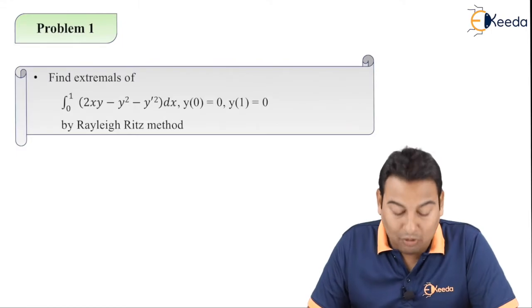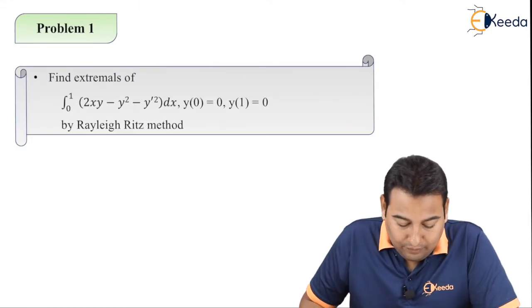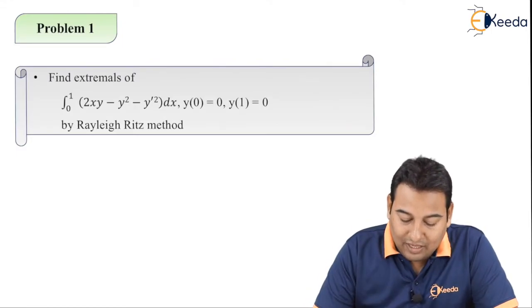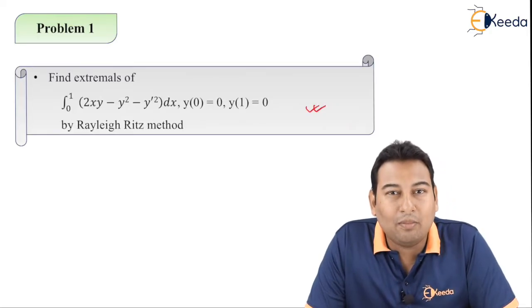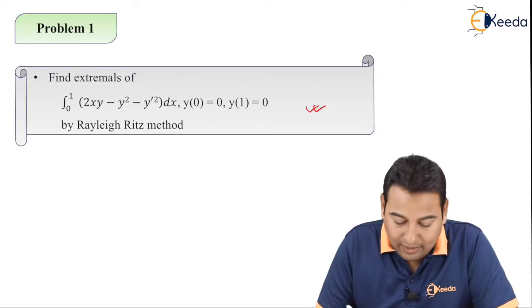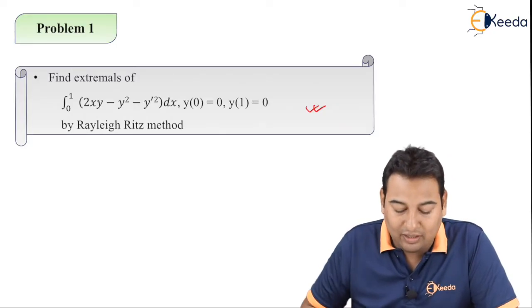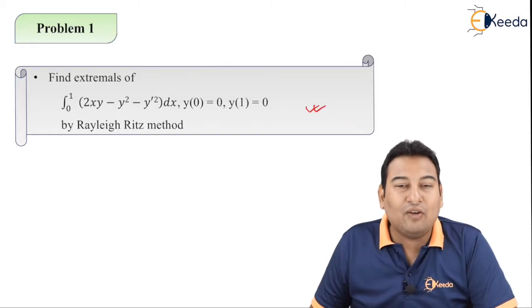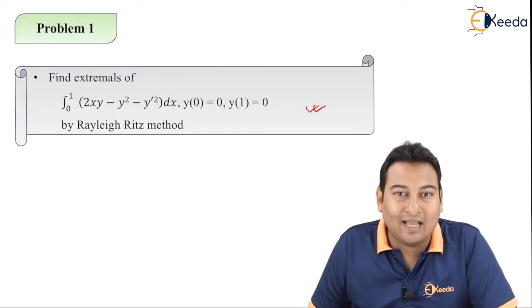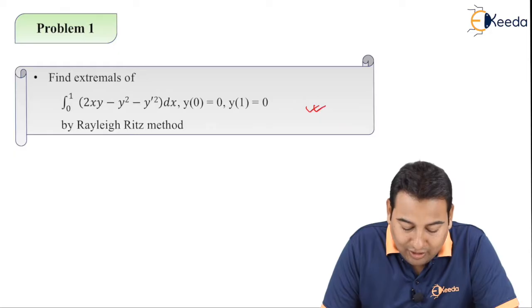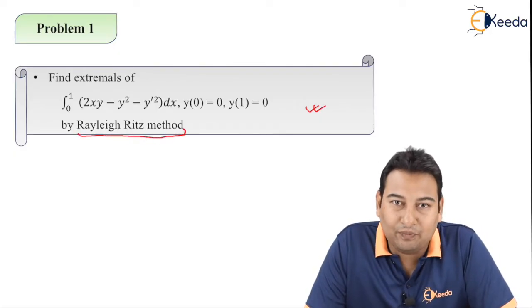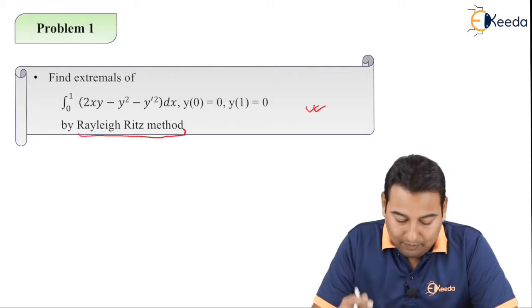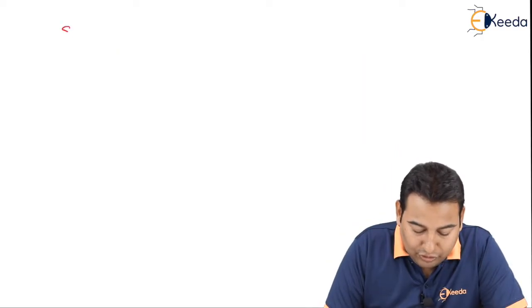This is our first problem. We need to find the extremal of this type of problem. We already solved a similar type in Type 1, Problem 5, where initial conditions were given, but here we need to solve using the Rayleigh-Ritz method, as clearly mentioned in the exam. Let's start solving — beginning with Step 1.